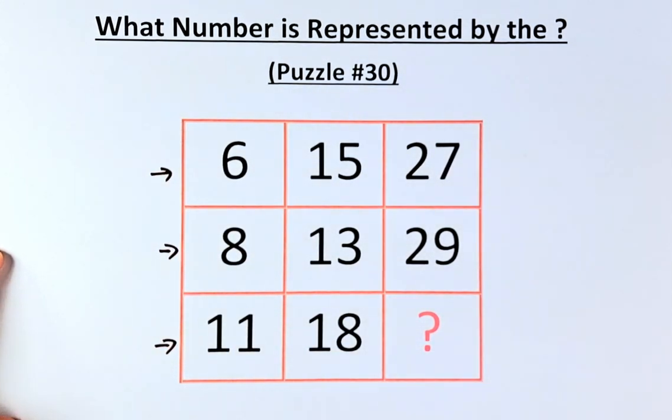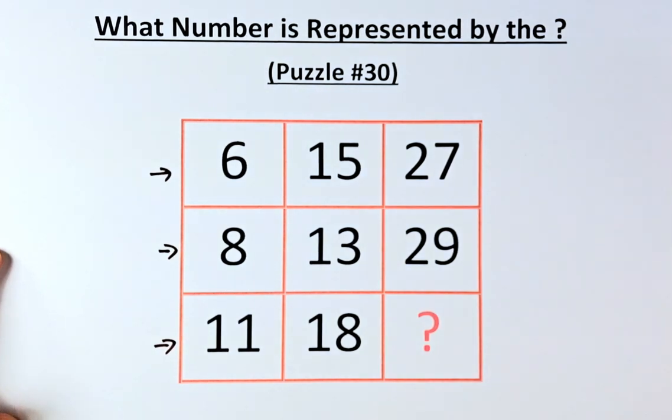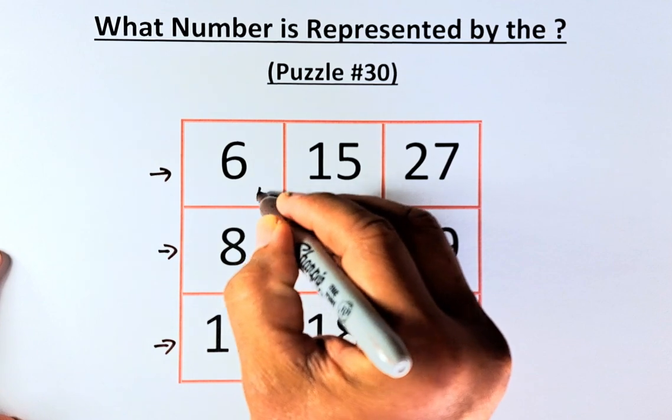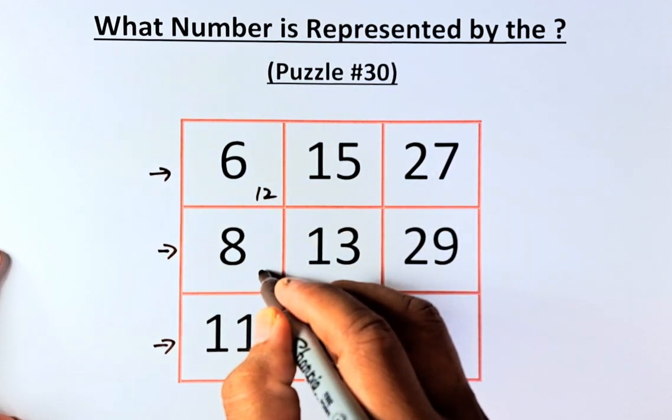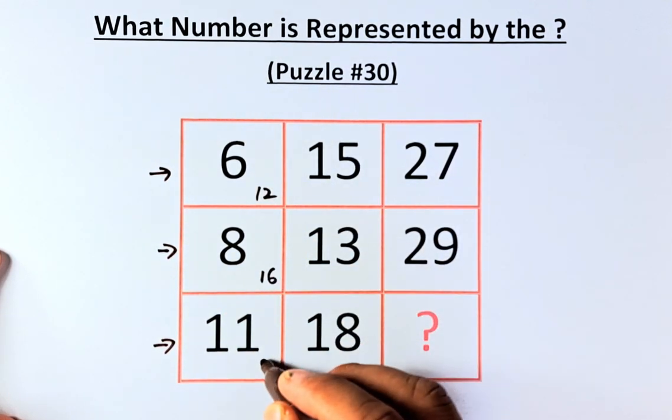So 6, 15, and 27. What we're going to do is just double the numbers in the first column. So 6 becomes 12, 8 becomes 16, and 11 becomes 22.